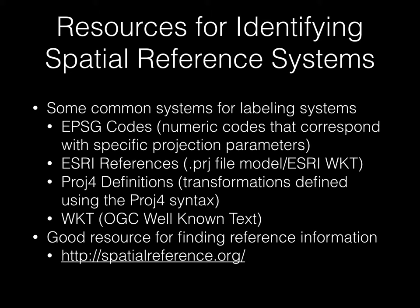You may encounter Proj4 transformation syntax as another way of defining the mapping from one coordinate system to another. Finally, the Open Geospatial Consortium — an international standards organization for geospatial data — has also defined a well-known text (WKT) representation of coordinate reference system parameters. Any given dataset may have one or more of these pieces of information associated with it defining what the coordinate system is. A good resource for finding geospatial reference information and seeing representations in these and other common systems is spatialreference.org.